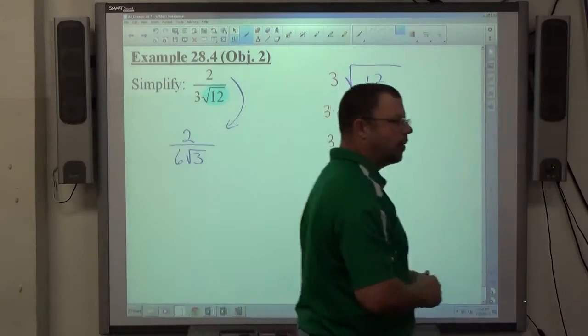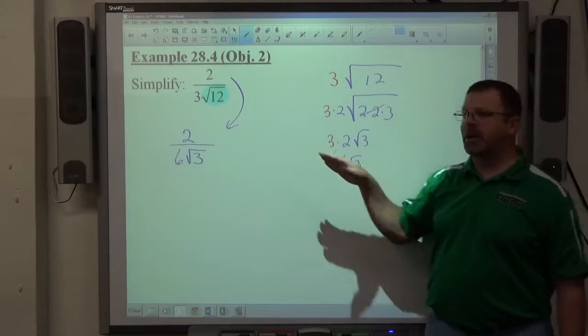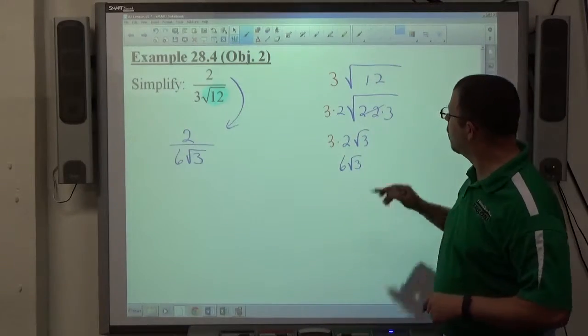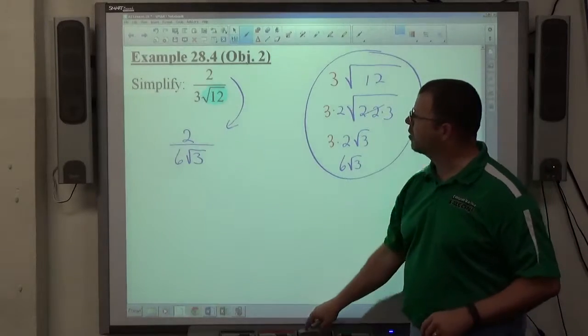So that would be the first thing I'd want to do. In general, when I see radicals, that's the first thing I always look for. Is there some way to make the radical simpler before I go on to do whatever I'm supposed to do with the problem? Anytime you can do that, you make numbers smaller, you make the problem easier, it's worth doing. So look for this scenario always. Is there some way to pull a perfect square out?